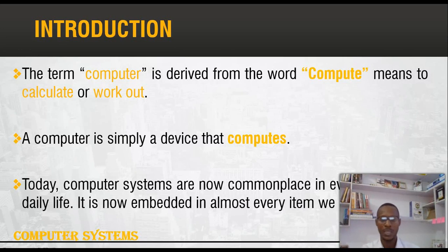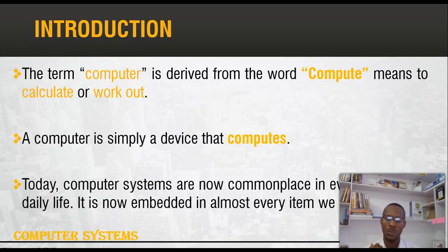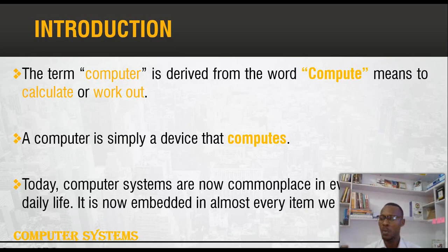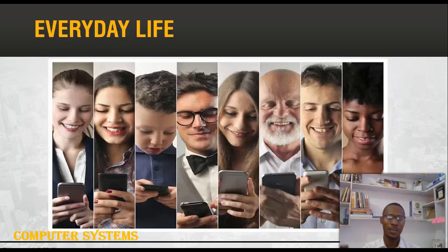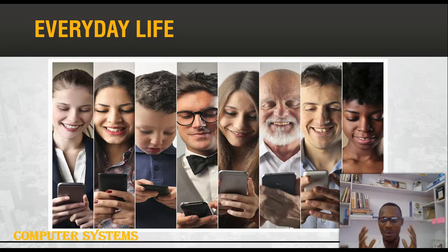Today, in almost every part of our systems, we have computers embedded in them — right from our wristwatches, our smartwatches, our smart lenses, up to every part of the things that we use today: our digital PCs, our digital televisions, our washing machines. All these things we use are ICT-embedded. For example, our cell phones — everybody is making use of their phone.